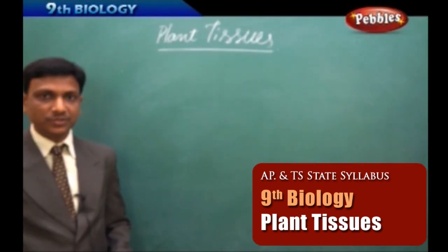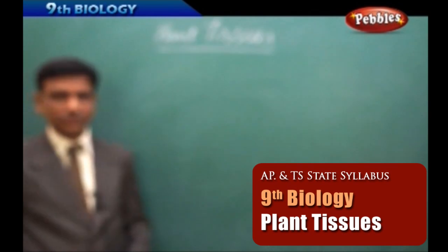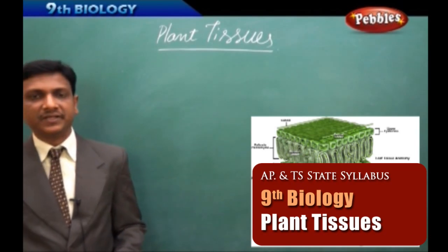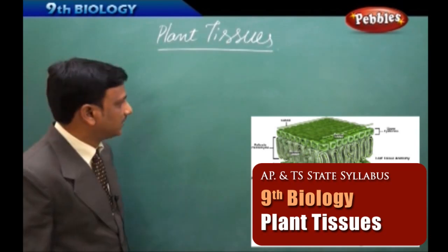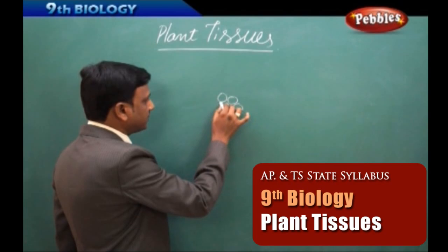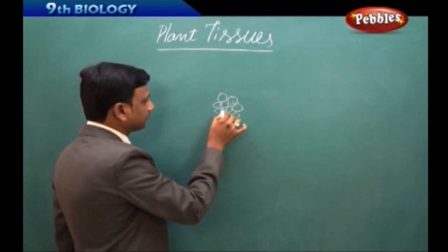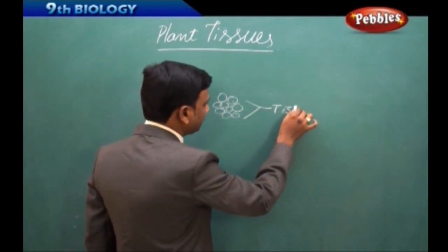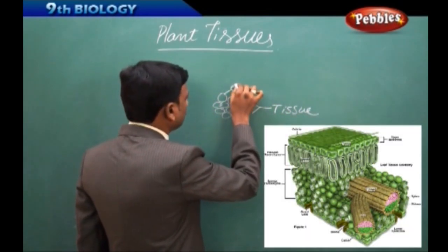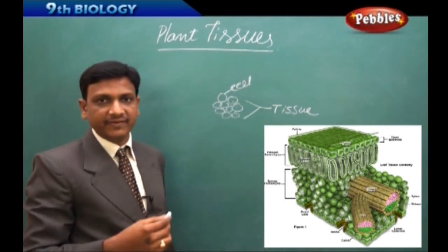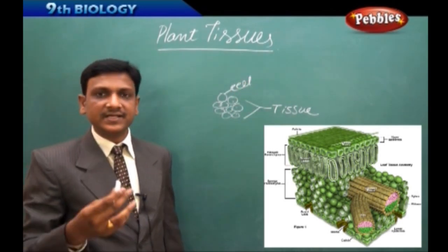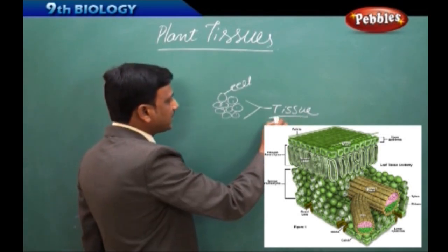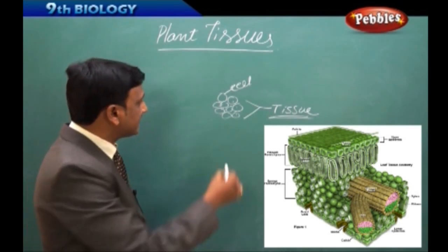Now we are going to the chapter 'Plant Tissues'. What is a tissue? A tissue is nothing but a group of cells. So a group of cells is called a tissue. We already studied about cells in the previous chapter — we studied the structure and functions of the cell. Now, what is the tissue and what is the use of the tissue?